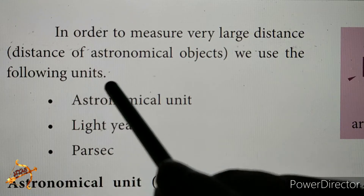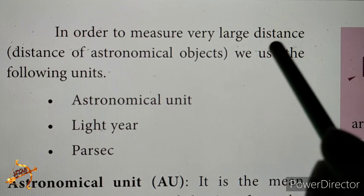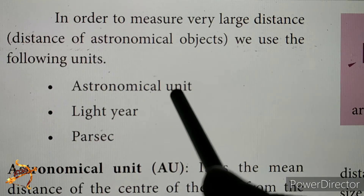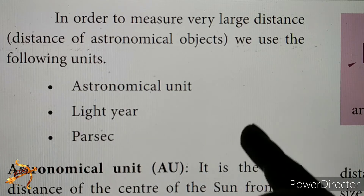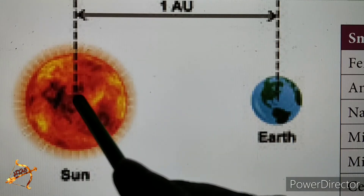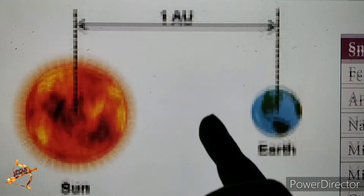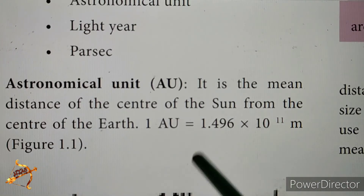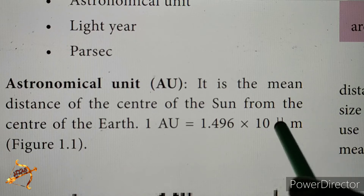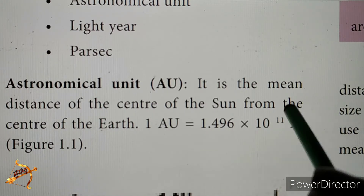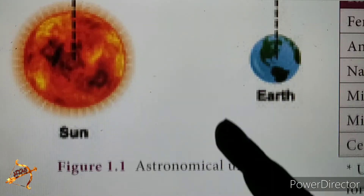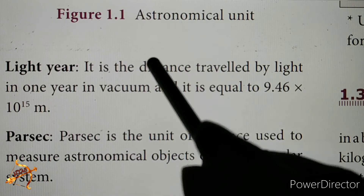In order to measure very large distances, we use special units. The first is the Astronomical Unit (AU), which is the mean distance of the center of the Earth from the center of the Sun. Its value is 1.496 × 10¹¹ meters. This is used to measure the distance between astronomical bodies.